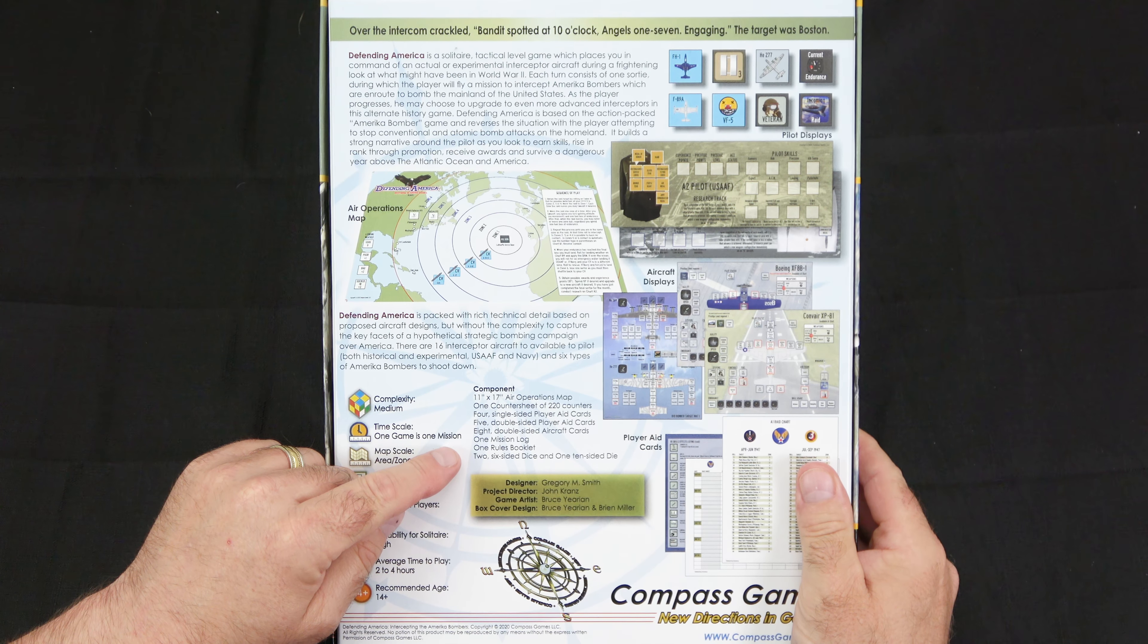And we'll take a look at the player aids that come with the game. Like I was just talking about on the bomber display mat, you will choose a target, and that will be done by using the A1 raid chart. What you're going to do is you're going to roll 2d6, and you're going to consult the month and the year, and that will be the target for the Luftwaffe.